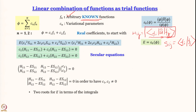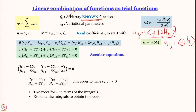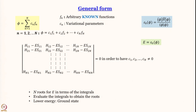We get two roots of E from the quadratic equation expressed in terms of the integrals. Once we evaluate those integrals — as we will for particle in a box — we get two numerical roots. Out of these two roots the one with lower energy corresponds to the ground state energy. This is the general form: n is not restricted to 1 and 2; it can go all the way up to any number N.